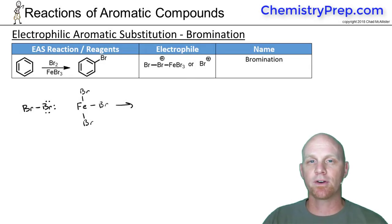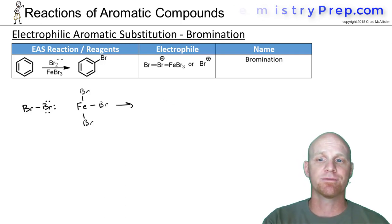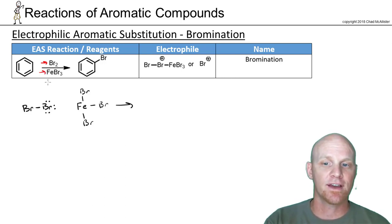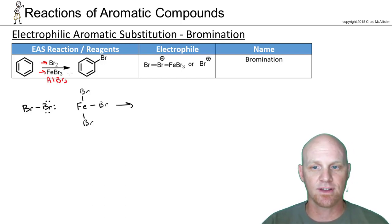The first EAS reactions we'll look at are halogenation reactions, bromination and chlorination. We're looking at bromination first. The combination reagents here are Br2 with FeBr3, which is a good Lewis acid catalyst. Technically we could also use AlBr3, another good Lewis acid catalyst.